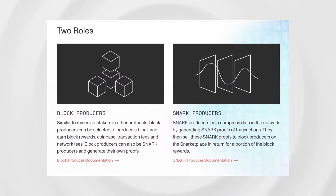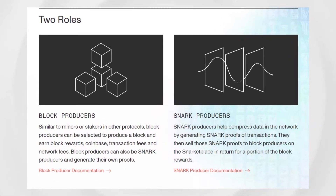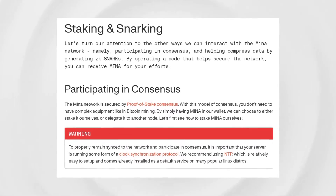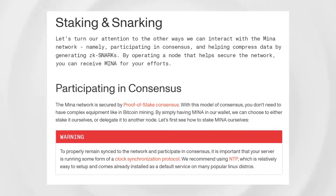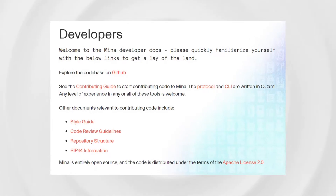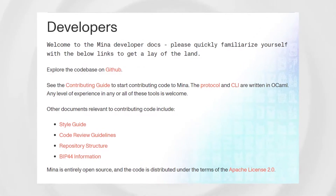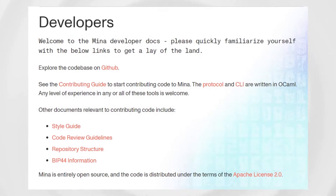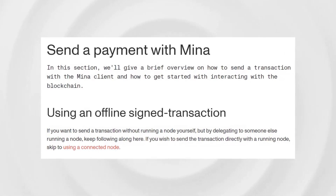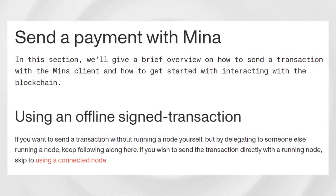Number one: Block producers select which transactions to include in the next block and win that block's reward. In that way, they are like the miners or validators of other blockchains. Number two: Snark workers dedicate computing power to help compress network data and generate proofs of transactions. Block producers can then bid on these proofs, for which snark workers are paid in MENA.